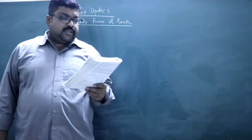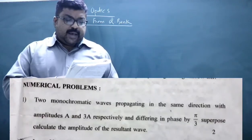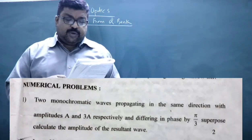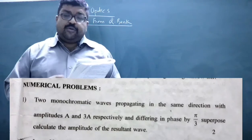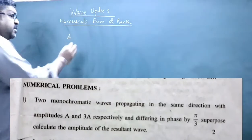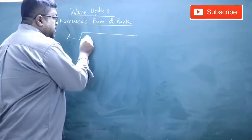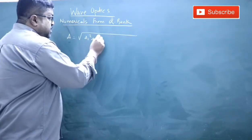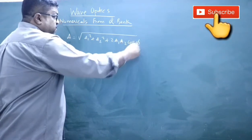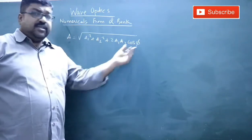Question number one: you have two monochromatic waves propagating in the same direction with amplitude A and thrice A, differing in phase by π/3. Superpose and calculate the amplitude of the resultant wave. The amplitude of the resultant wave is given by A = √(A₁² + A₂² + 2·A₁·A₂·cosφ), where A₁ and A₂ are the amplitudes of the given waves and φ is the phase difference.